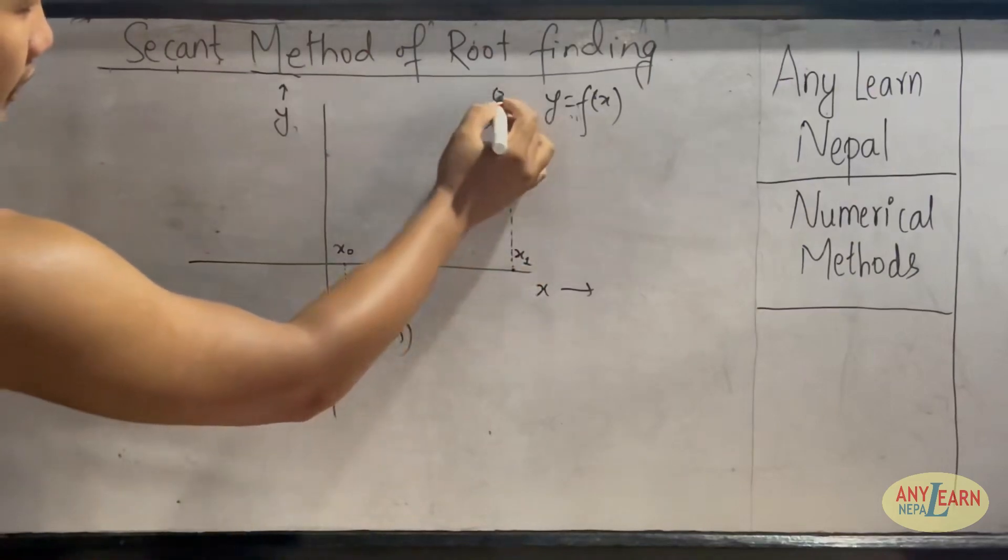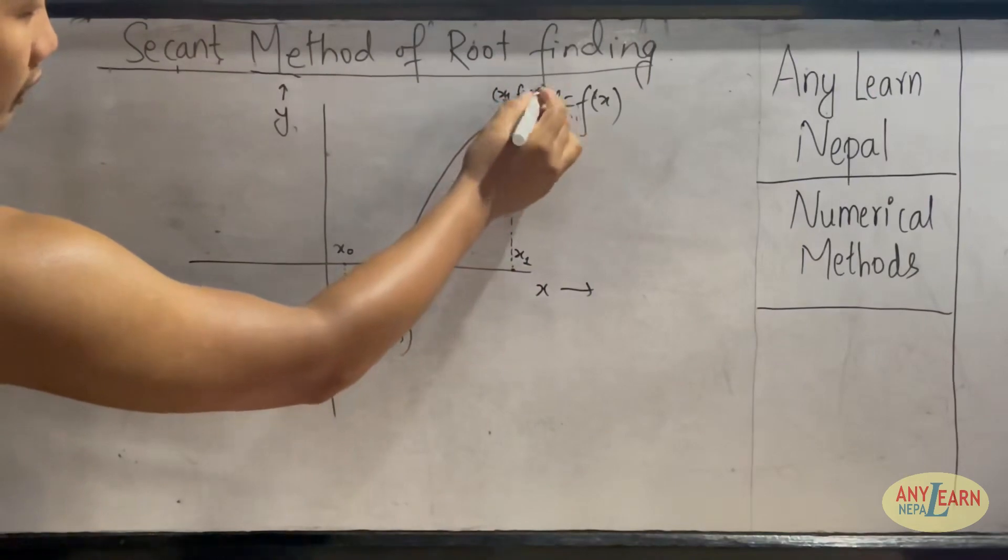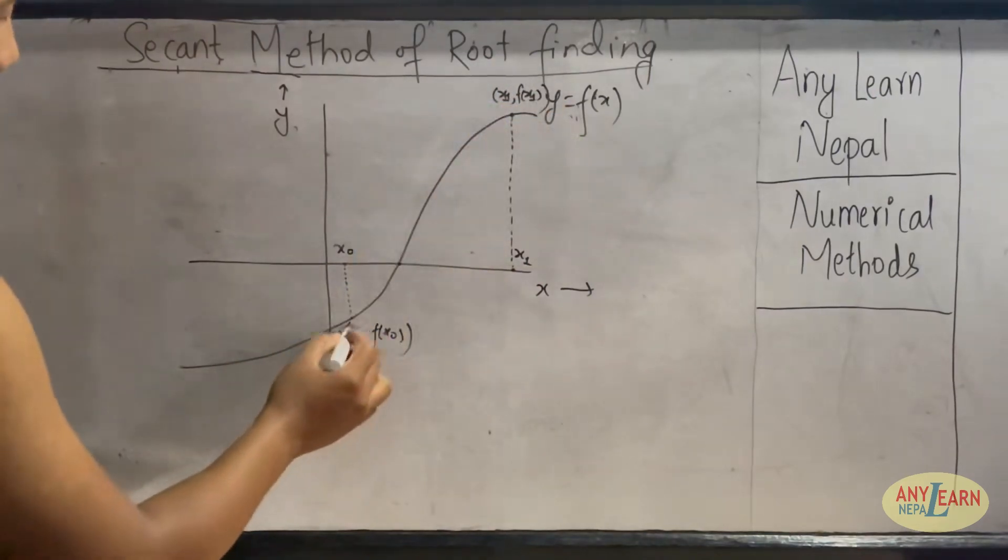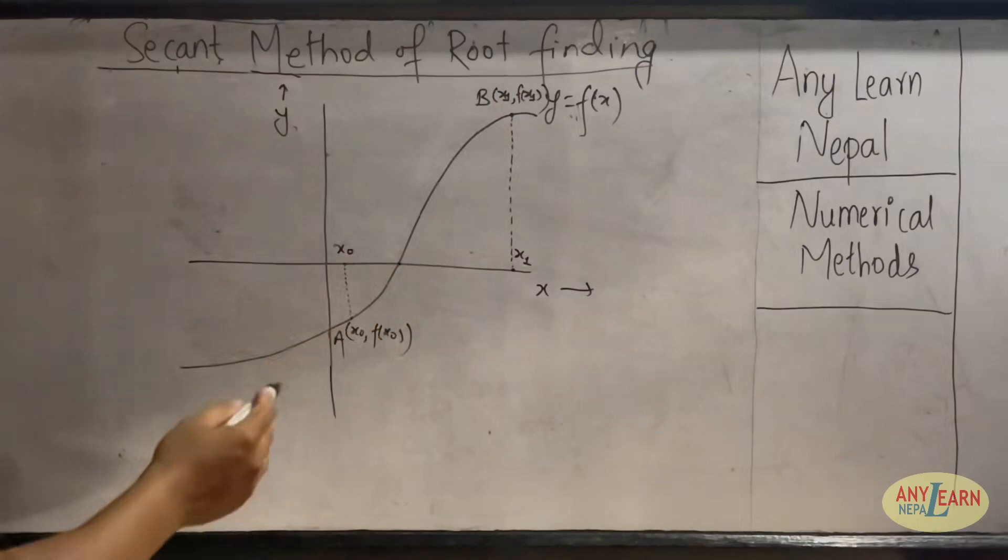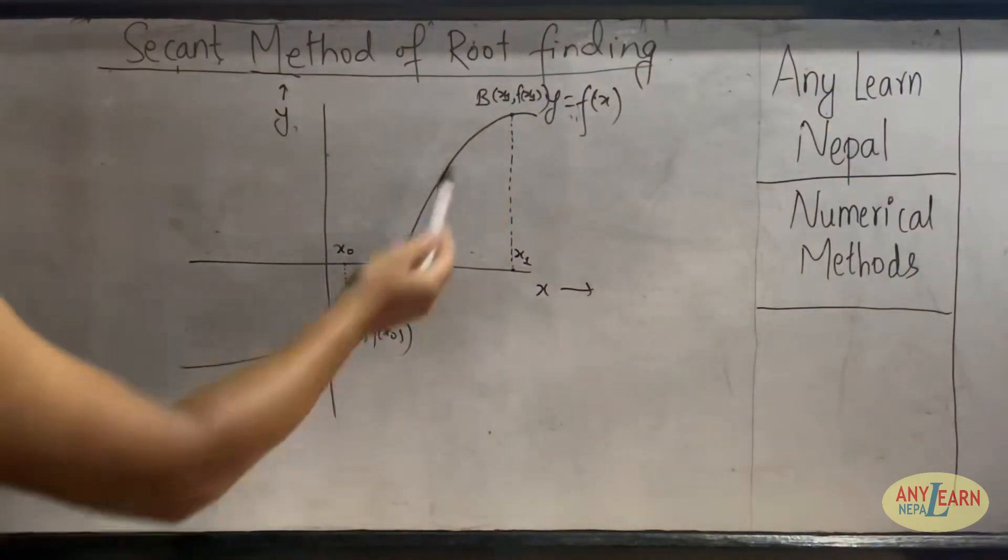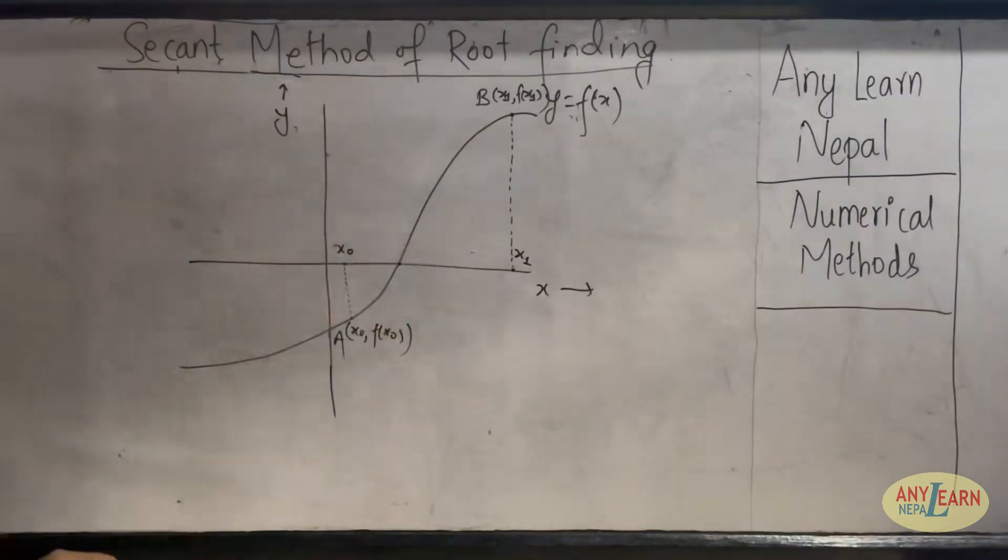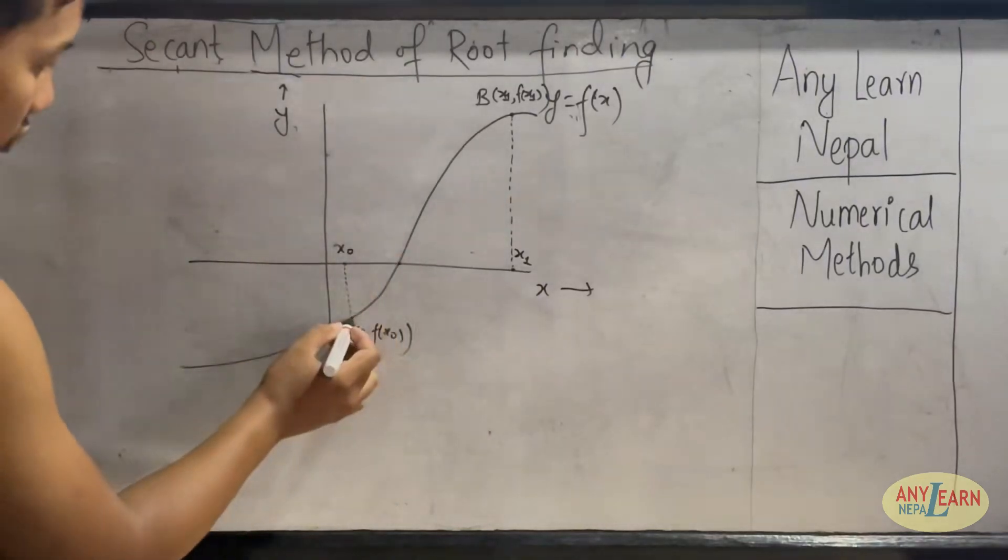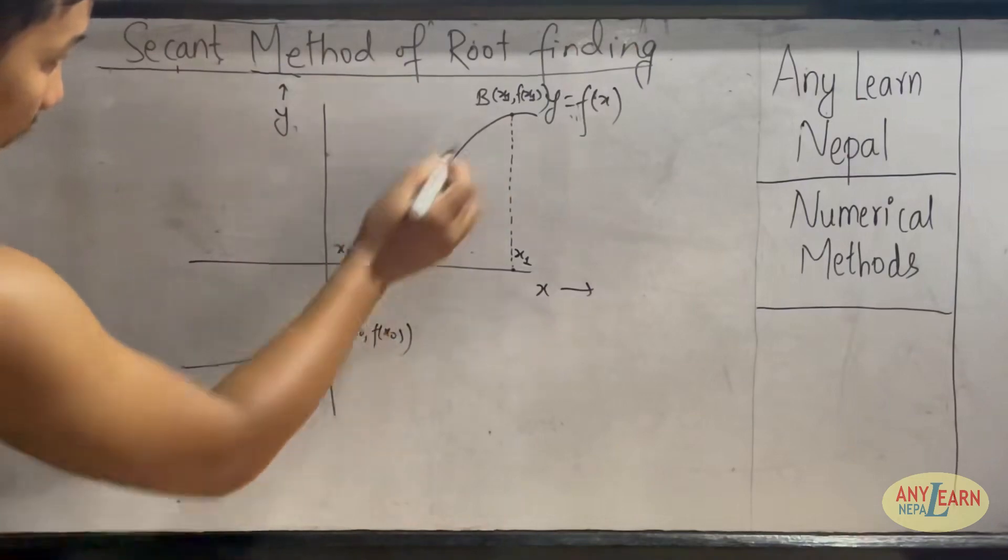So this point is (x1, f(x1)). Let's say this is point A and this is point B. Now what we have to do is we have to draw one secant from these two points A and B. That's why it is called the secant method actually.